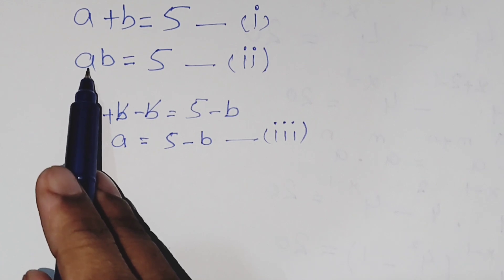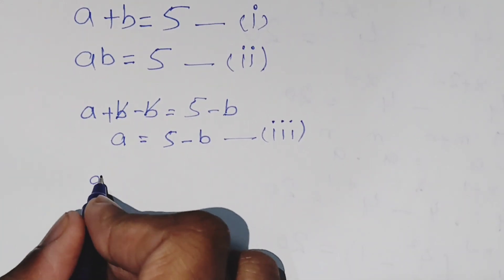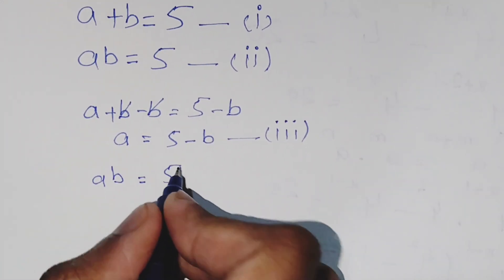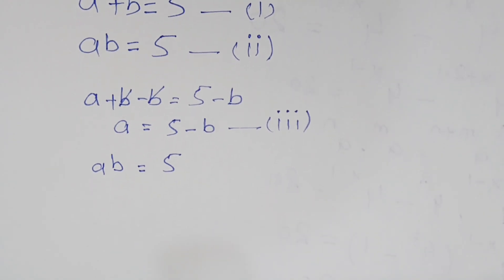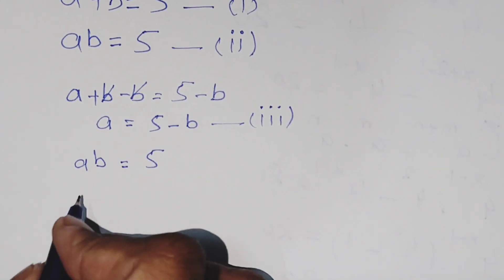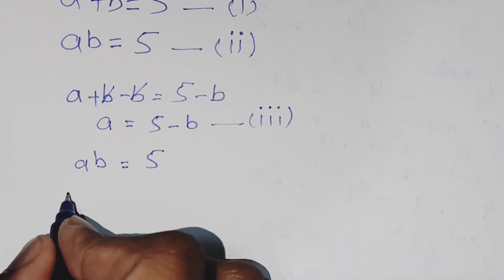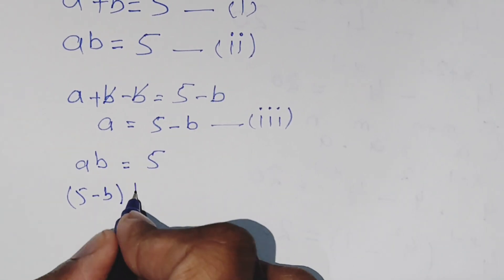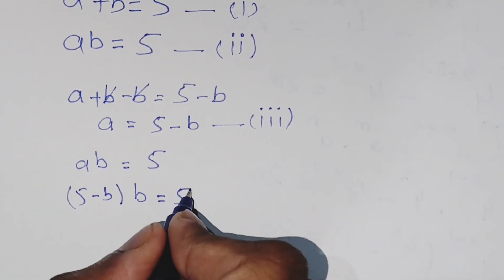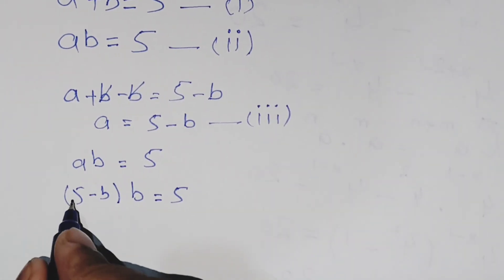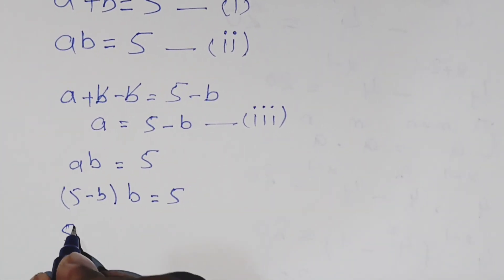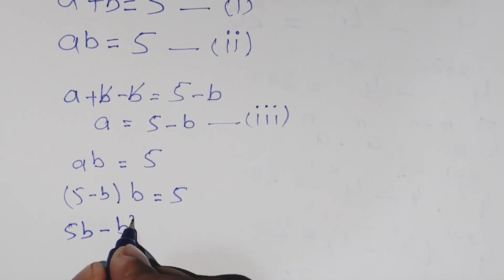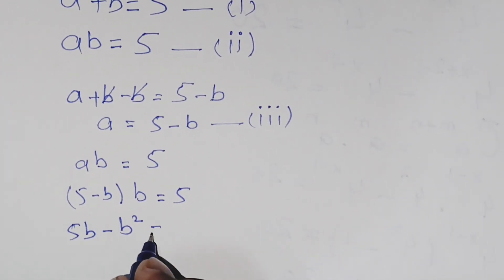Now we will put this value of a in the second equation. We have ab equals 5, so we substitute: (5 minus b) times b equals 5. Expanding: 5b minus b squared equals 5.